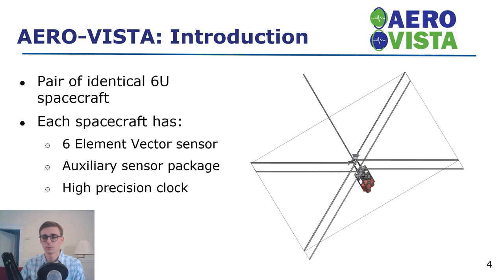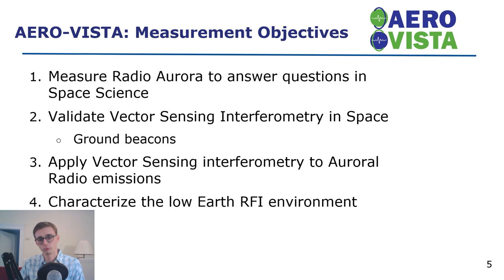Aero and Vista are intended to measure the radio aurora to answer questions in space science. They will also be used to validate vector sensing interferometry in space using both ground beacons and the radio aurora, and to apply vector sensing interferometry to auroral radio emissions and characterize the low earth radio frequency environment.